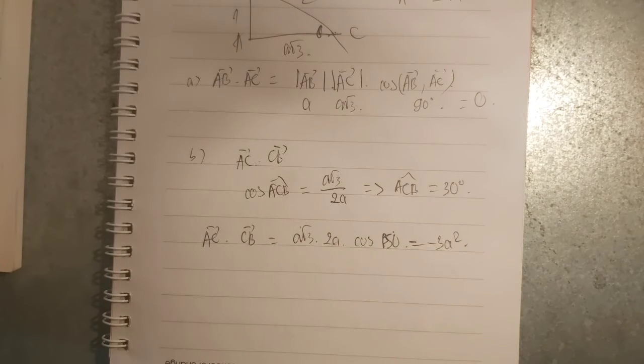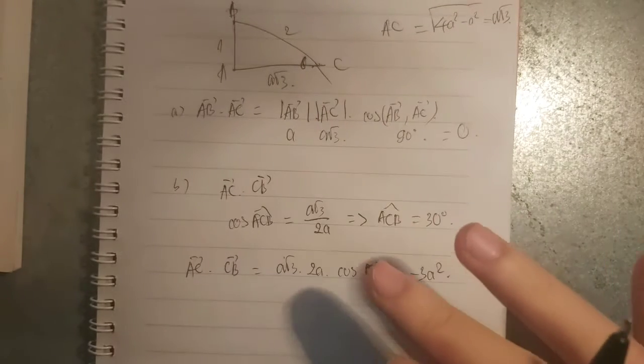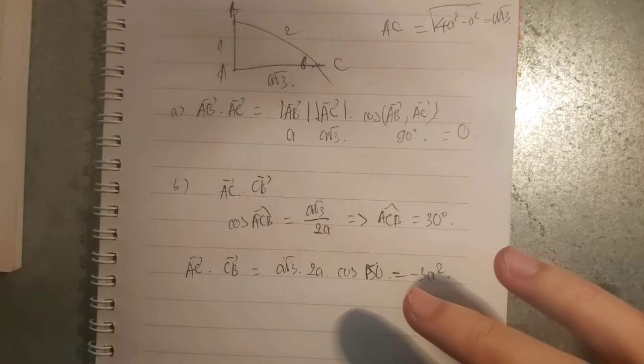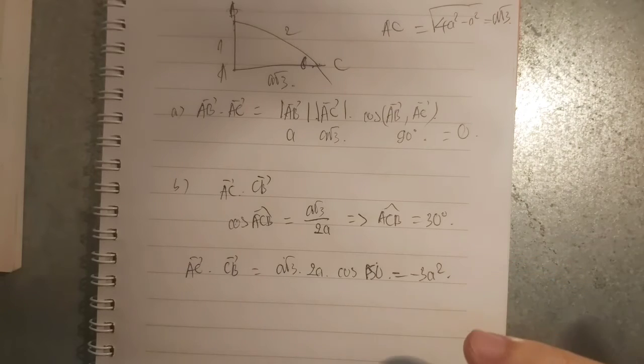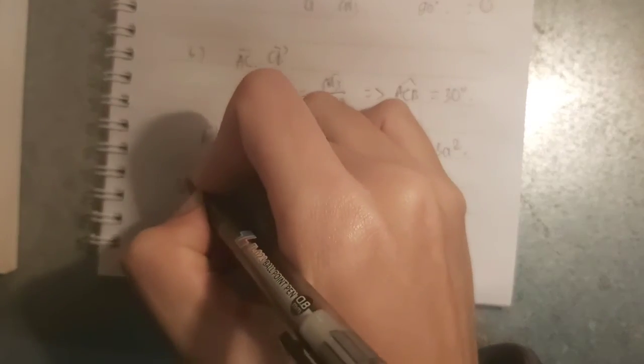Phần C mọi người tự làm nha, phần C đó là AB x BC. Chúng ta sang một ví dụ tiếp theo, ví dụ phải chứng minh, ví dụ 2.